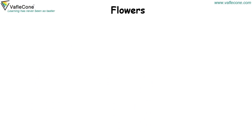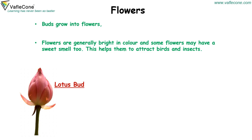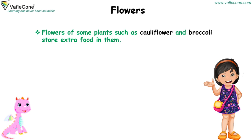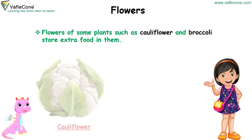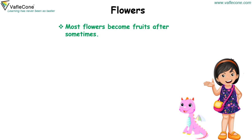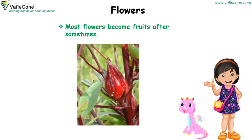Flowers: Buds grow into flowers. Flowers are generally bright in color and some flowers may have a sweet smell too. This helps them to attract birds and insects. Flowers of some plants such as cauliflower and broccoli store extra food in them. Most flowers become fruits after some time.